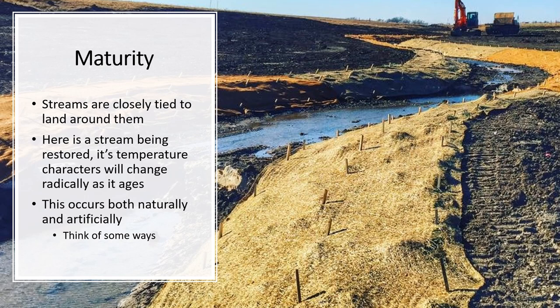Stream temperature is also closely tied to stream maturity. Here is a very young, generated stream being built. The temperature this stream experiences for the next 10 to 50 years will be very different than what it will experience in 100 years. They're doing a good job staking and controlling runoff and erosion while plants build up, since all those plants were removed. The plants that grow first will tend to be small grasses, and it will take a long time before large trees establish. So stream temperature is closely tied to the land it occurs in.